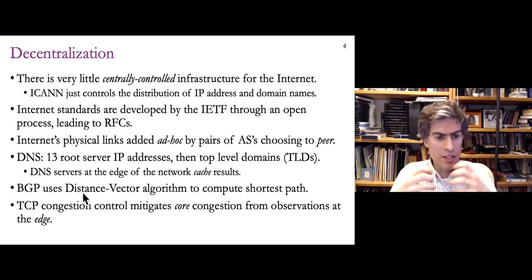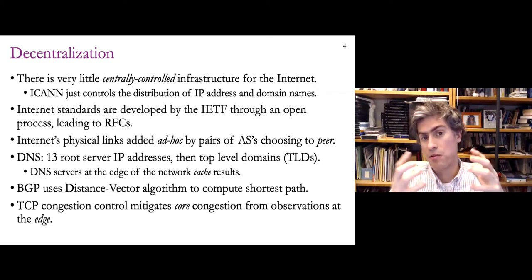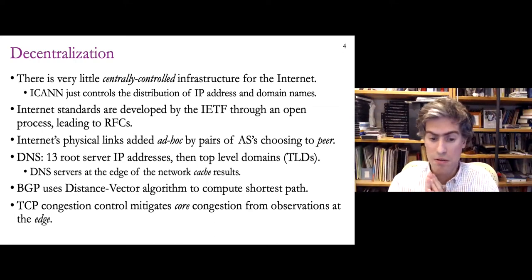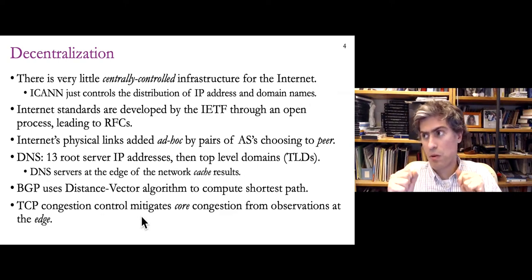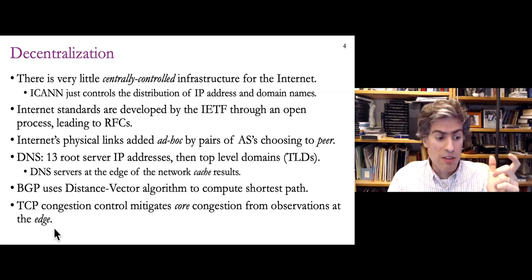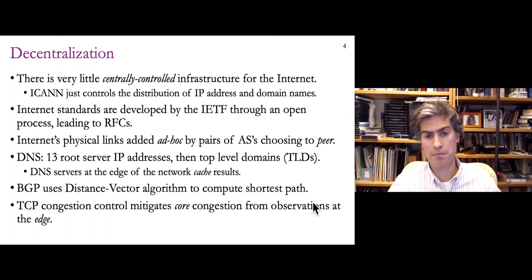BGP — Border Gateway Protocol — is the glue of the internet, operating in a decentralized manner using a variation of the distance vector algorithm to compute shortest paths. Each individual actor only has to interact with its neighbors and use that information to make optimal decisions about reaching anywhere across the many hops of the internet. Finally, TCP congestion control was a way to control the pacing of connections so we didn't overwhelm the network, using packet loss observations from host to host — an end-to-end approach at the edge that mitigates congestion in the core. That's a type of decentralization as well.